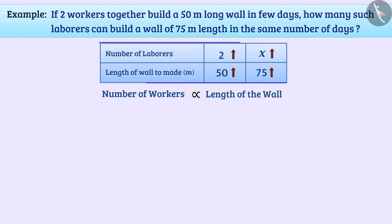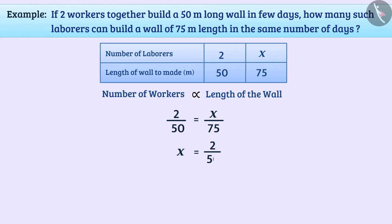So, for the given situation, we can write 2/50 = x/75, which means x = 3 laborers. Therefore, it will take 3 laborers to build a 75 meter long wall.